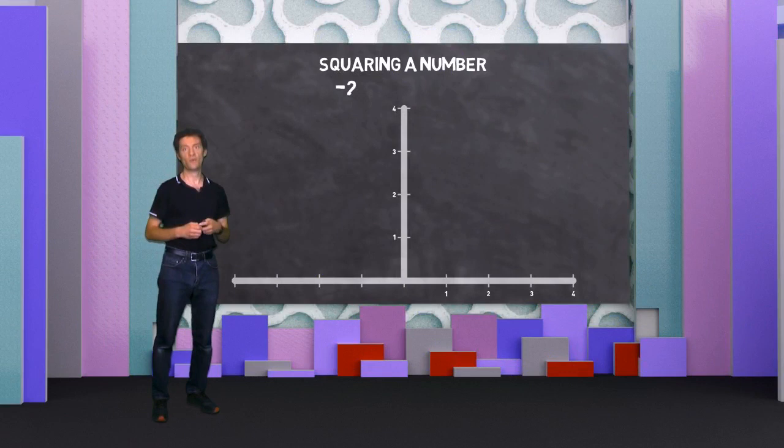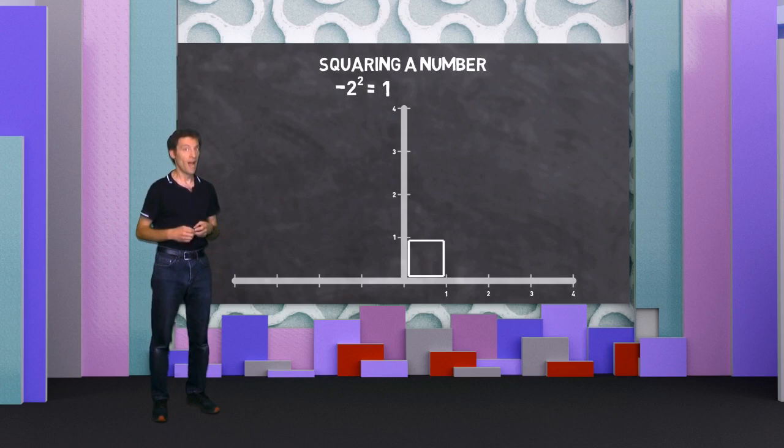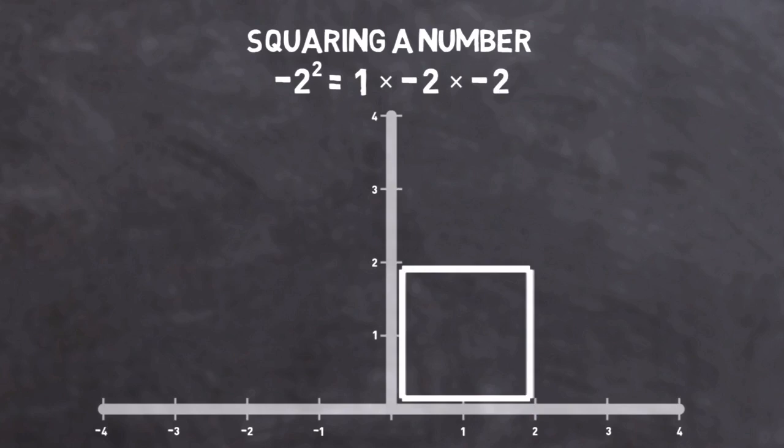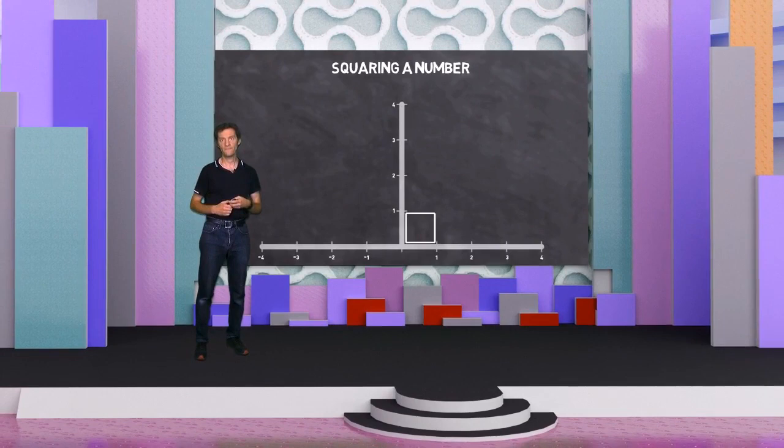What happens if I want to represent minus 2 squared? Again, we start with our unit square. Only this time, I'm scaling it by minus 2. The minus sign reflects the object, and the 2 scales it. Then, because we are squaring, I have to do the same again. The minus sign reflects the object, and the 2 scales it. This is one way of understanding why any negative number squared always gives a positive result. The 2 reflections always mean that the object ends up being back in the positive domain of numbers.